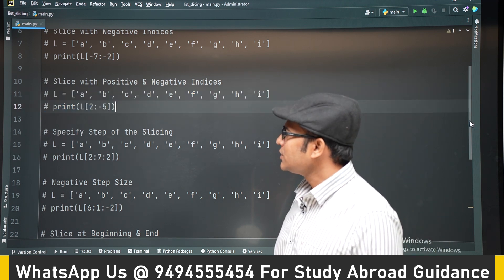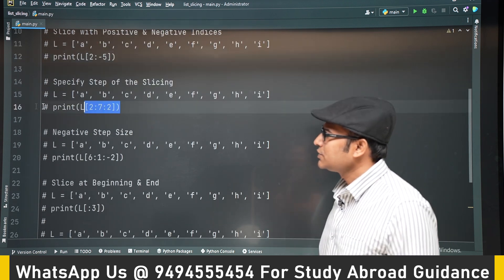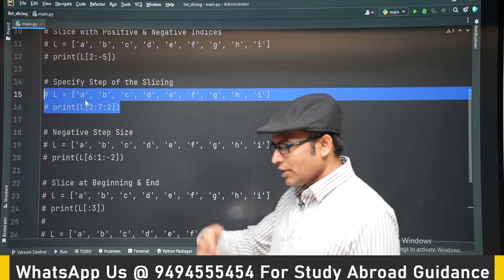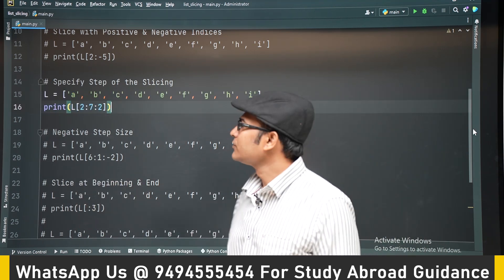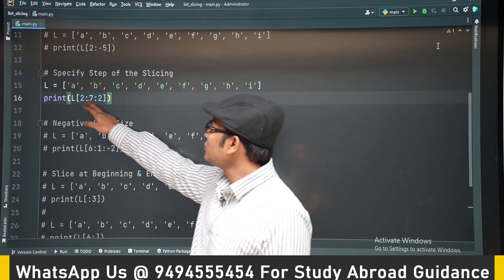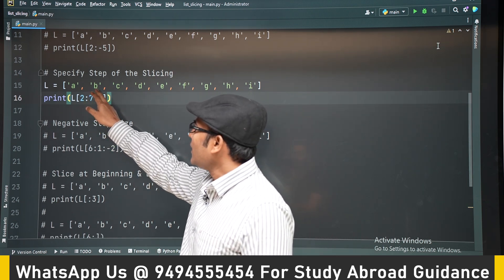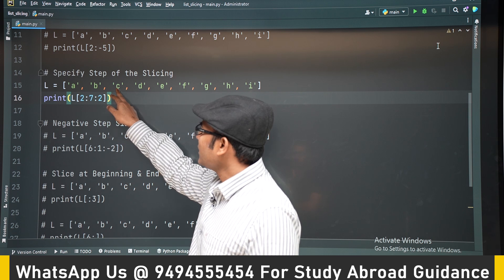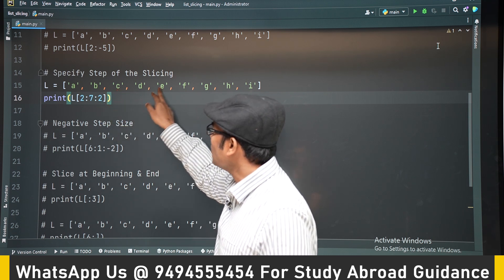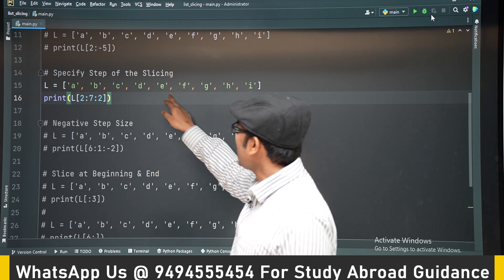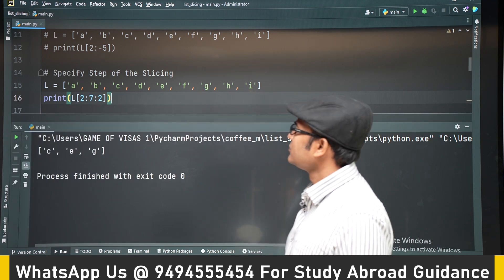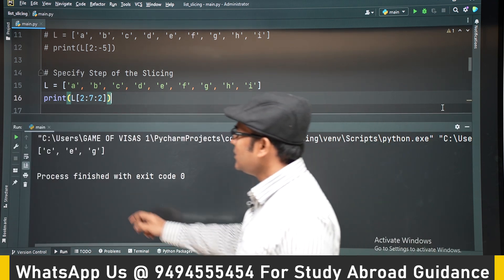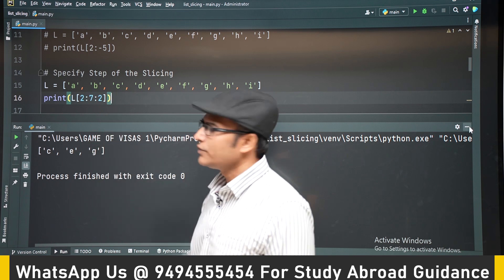And also you can specify a step. Step means in what steps you want to get the list. So if I write 2 to 7 in steps of 2, then it is going to start from C, and in steps of 2 it will go C, then E, then G. C, E, and G in steps of 2 it will go.